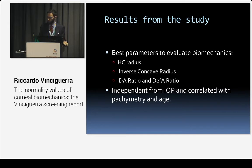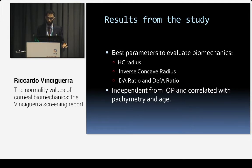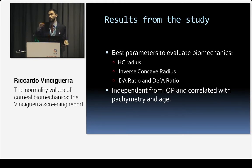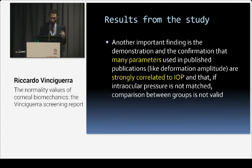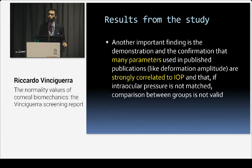The results of the study: we found that the best parameters to evaluate biomechanics were highest concavity radius, inverse concave radius, deformation amplitude ratio, and deflection amplitude ratio, because they were independent from IOP and correlated with pachymetry and age, which are biomechanical characteristics of the eye. We know that biomechanics increases — the eye gets stiffer with increasing age — so correlation with age means correlation with biomechanics. We also demonstrated that many past publications using old parameters found those parameters were strongly correlated with IOP, making group comparisons invalid without patient matching.